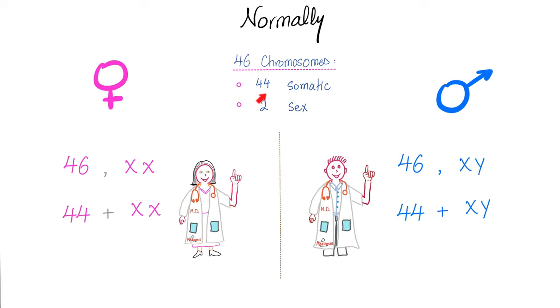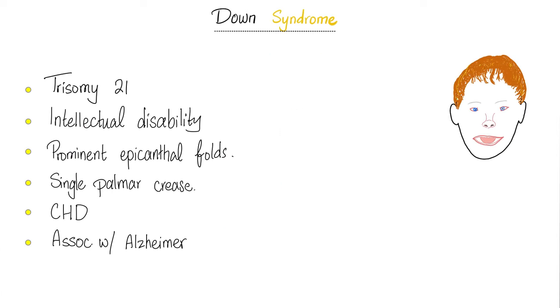Normally, you have 44 somatic chromosomes and two sex chromosomes. In females, you can write this as 46 including XX, or 44 plus XX. Males are 46 including XY, or 44 plus XY.